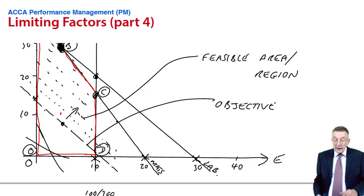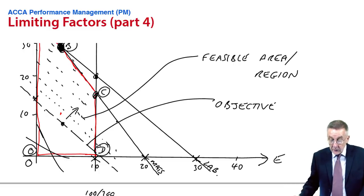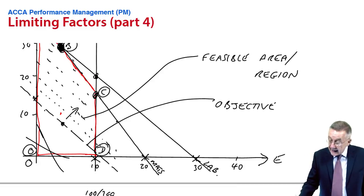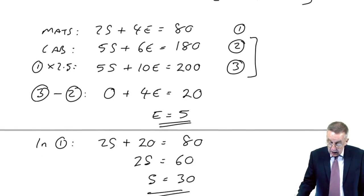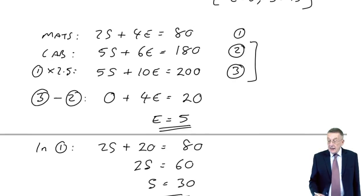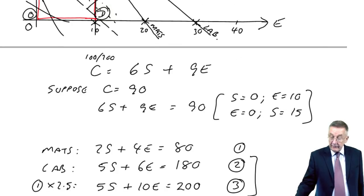We've done example one, and sorry, my graph has sounded a bit messy now because of what I was trying to explain, but we do know the optimum production was at point B, which was five executive chairs and 30 standard chairs, and it gave us a total contribution of 225.